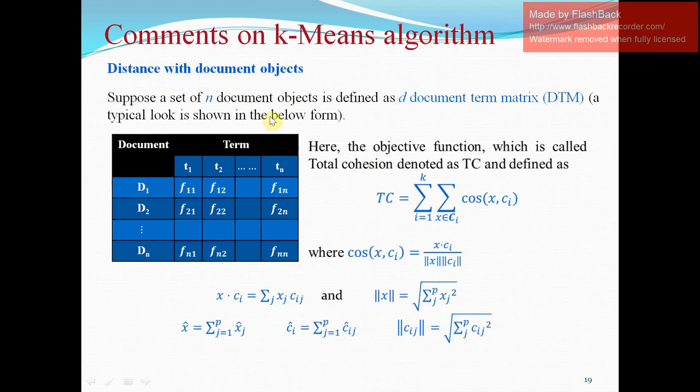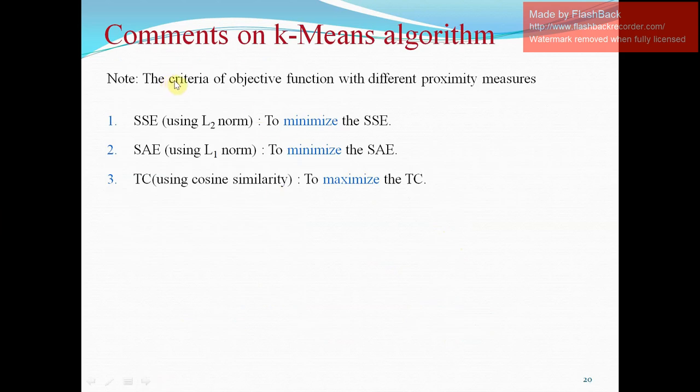For document type objects, the objective function which is called total cohesion, denoted as TC, and defined as summation which begins from i equals 1 to K, and then summation x belongs to CI, cos(x, ci), where cos(x, ci) equals x multiplied by ci, then mod of x and mod of ci. Now, for the criteria of objective function with different proximity measures, for SSE using L2 norm to minimize the SSE, SAE using L1 norm is used to minimize the SAE, TC using cosine similarity to maximize the TC.